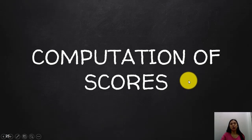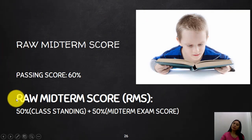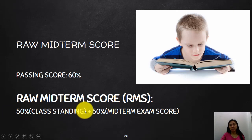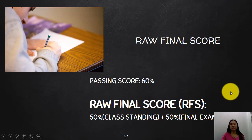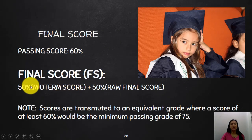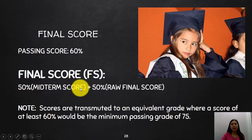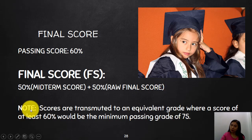The last topic is the computation of scores. For the midterm, your raw midterm score is computed as 50% of your class standing plus 50% of your midterm exam score. For the raw final score, it is the same: 50% of your class standing plus 50% of your final exam score. Your final grade is computed as 50% of your midterm score plus 50% of your raw final score.